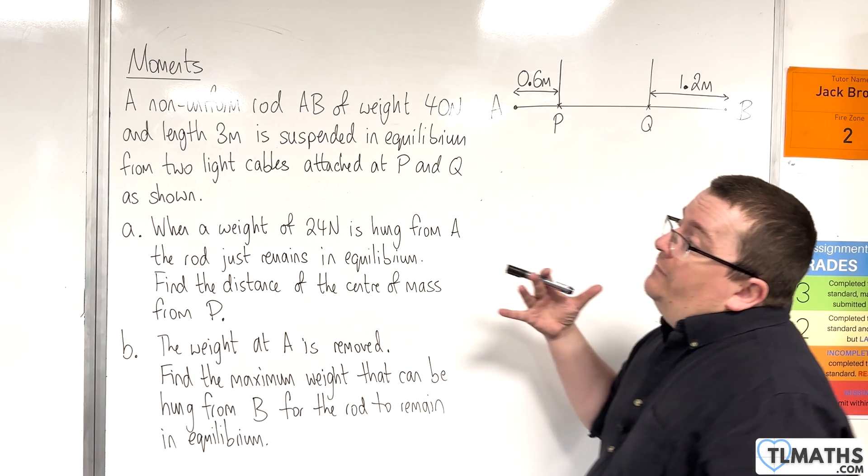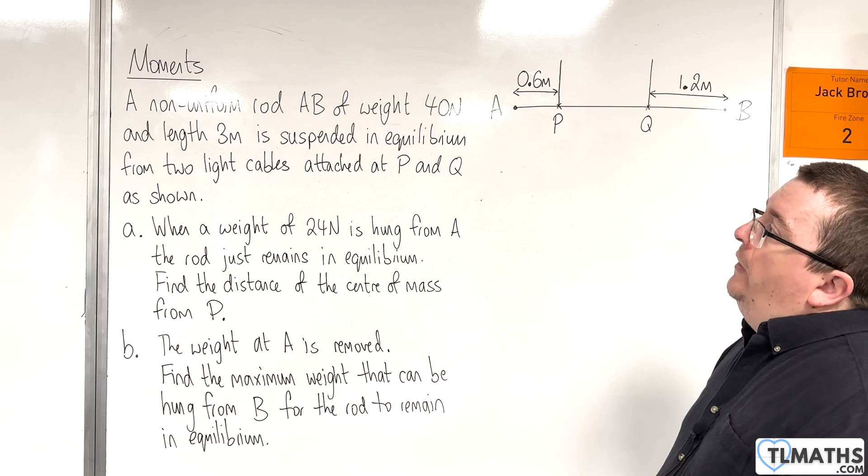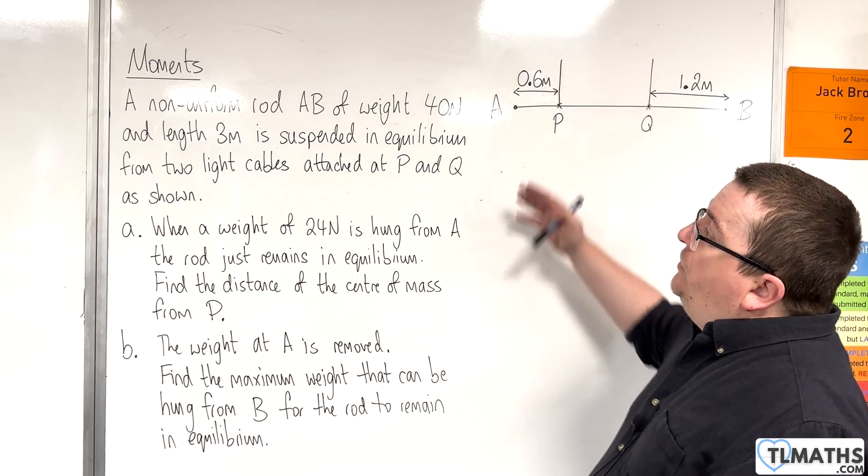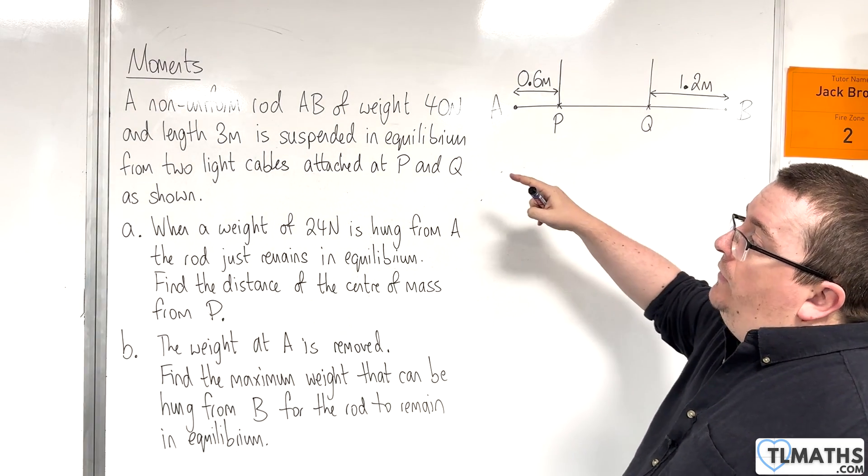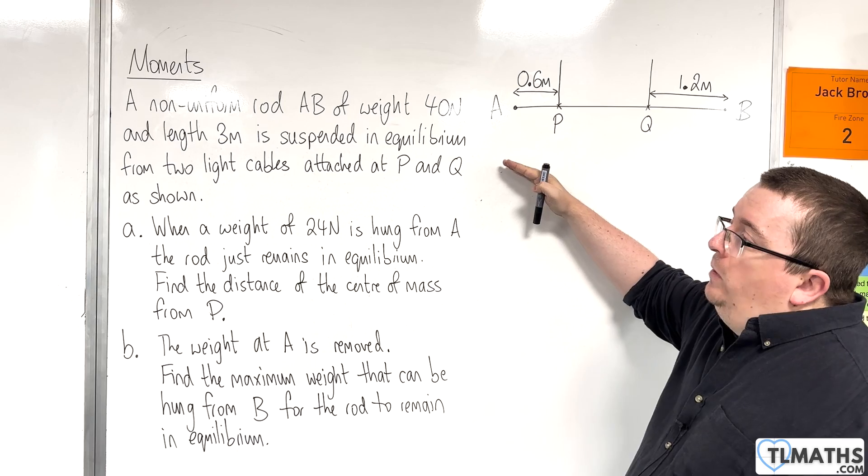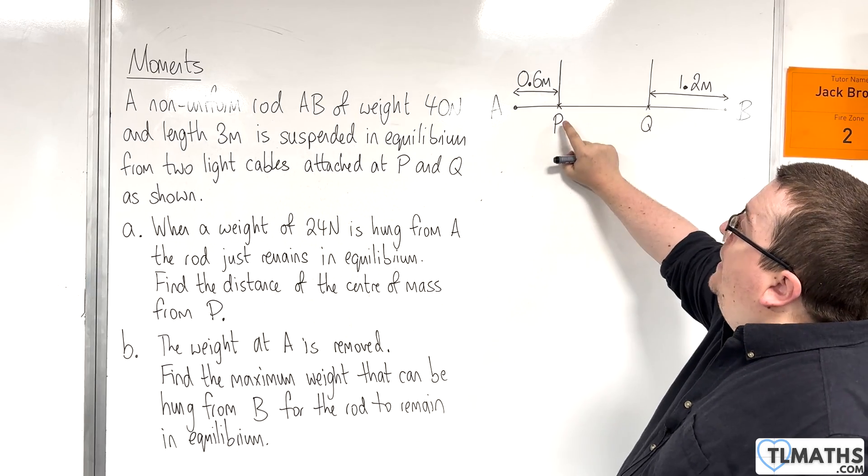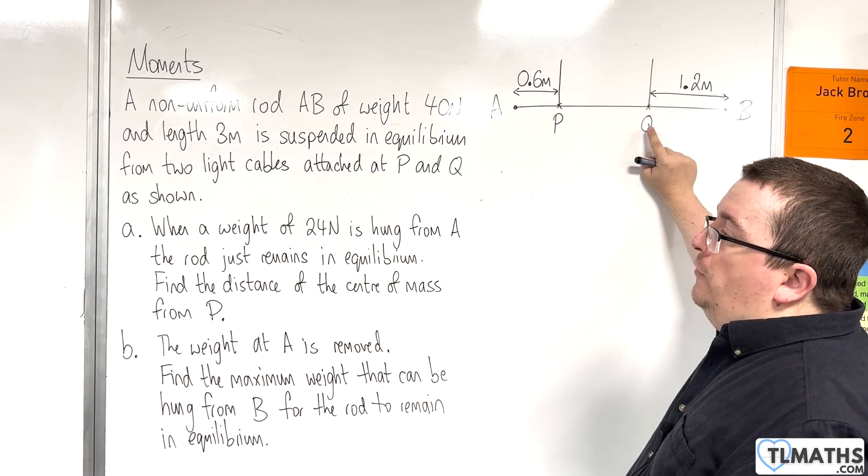In this video we have a non-uniform rod AB of weight 40 newtons and length 3 metres suspended in equilibrium from two light cables attached at P and Q as shown.